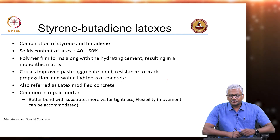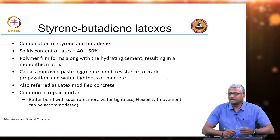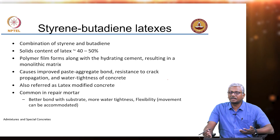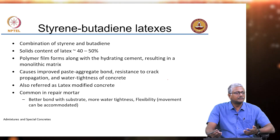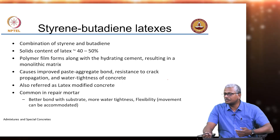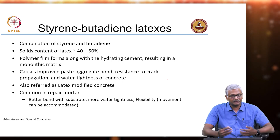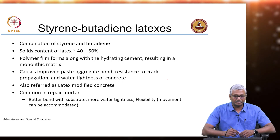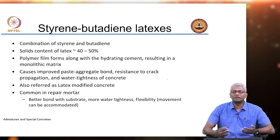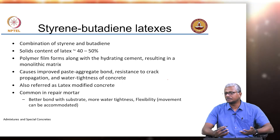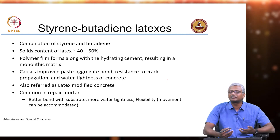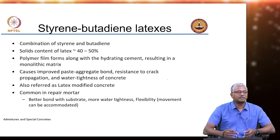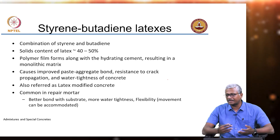One other specialty chemical is styrene butadiene latex. Latex is basically rubber — styrene butadiene are types of compounds typically found in rubber. So what do you think you will add rubber for? Essentially to introduce some more flexibility in your system. Flexibility in concrete also implies better crack resistance.